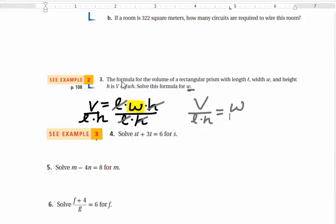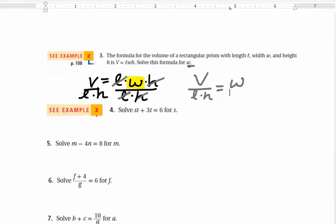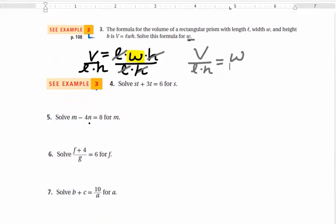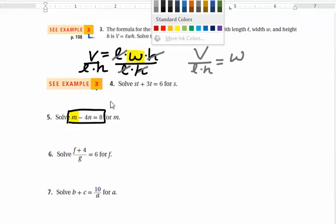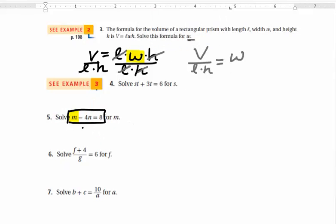Alright, the next one, let's see which one should we do next. Let's do number 5. M minus 4N equals 8. Now this isn't saying that M is 8 or N is 8 or anything like this. Right here, this is the original formula or equation that you're given. And you need to solve that for M. So the M is only given so that we know what variable we're trying to solve for. Our first thing that we need to do is get rid of the stuff that's next to the M. In this case, next to the M is a minus 4N.